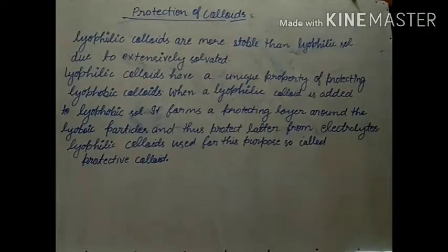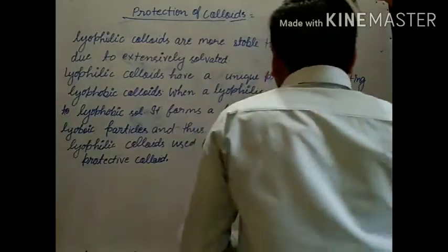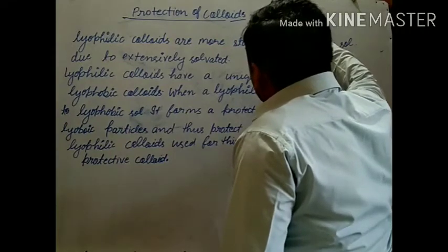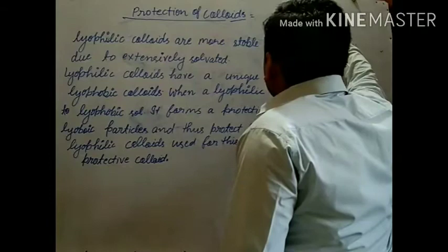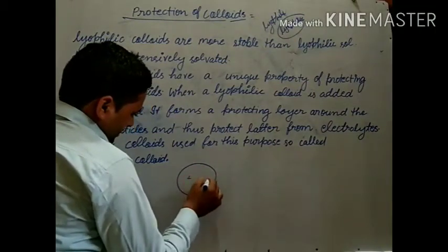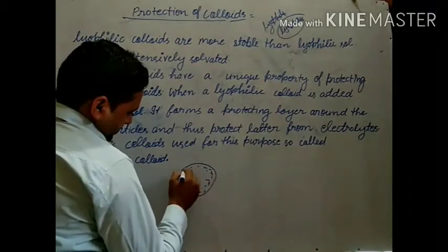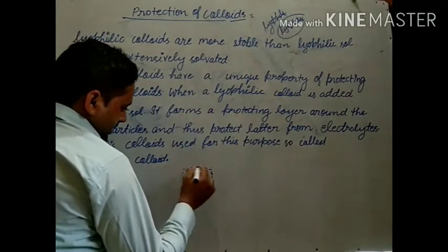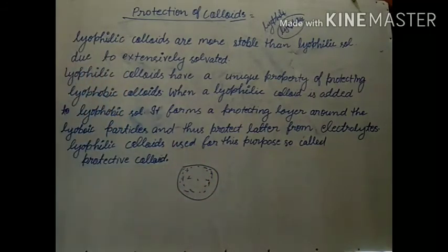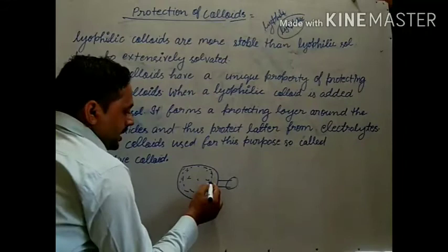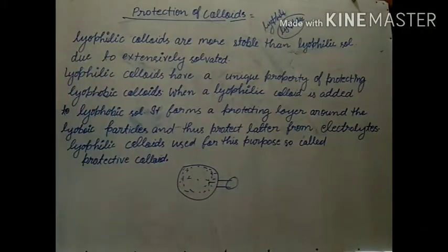So what we have seen here: lyophilic colloids protect lyophobic colloids. Here are the particles — like this. These are the lyophobic particles, and when lyophilic colloid is added, it forms one layer around the lyophobic particles, and this protects them from contact of electrolyte with the dispersed particles of the lyophobic sol, and by this it coats the lyophobic colloids.